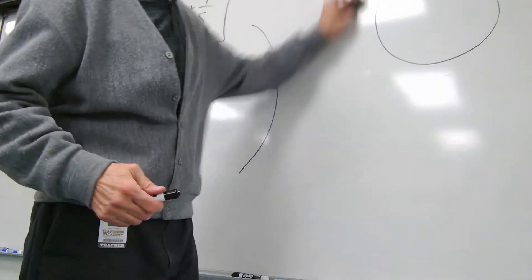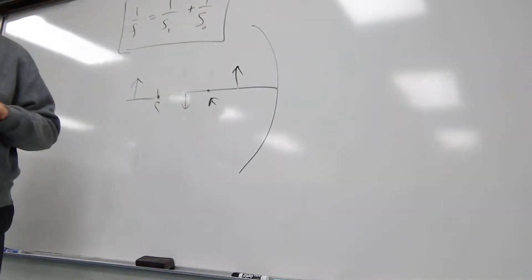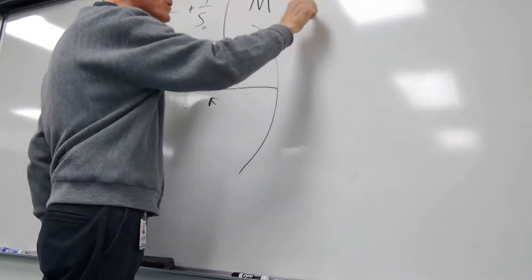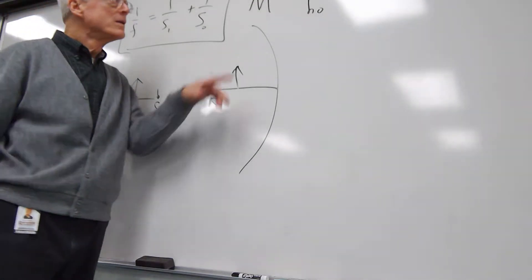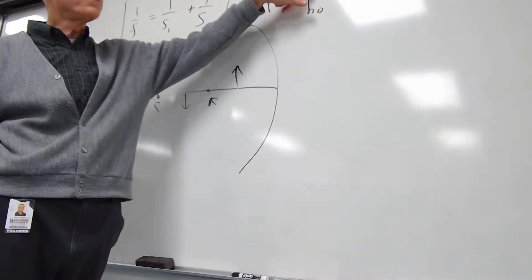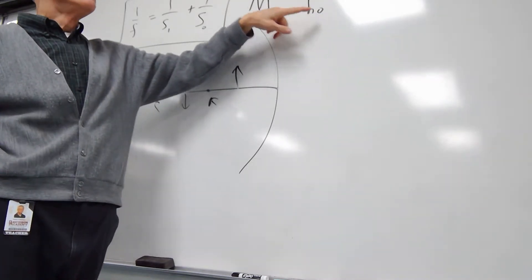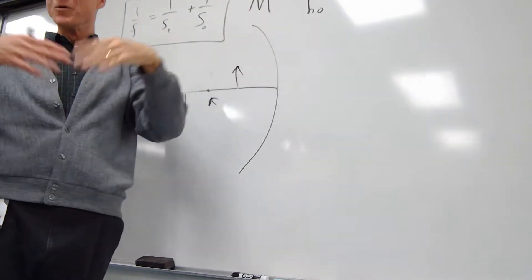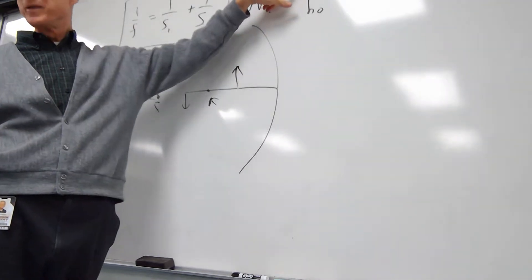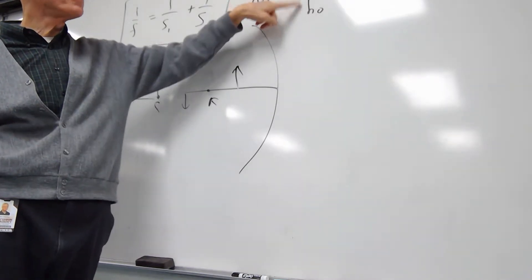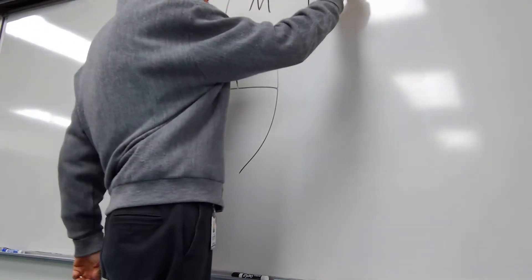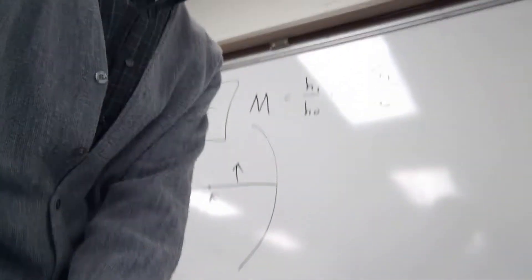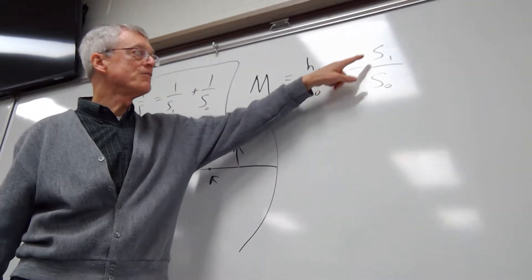The equation we didn't talk about yesterday — let's do that now. There is another equation you're going to use with these mirrors, with any curved mirror, and that's the magnification equation. First of all, it's hi over ho — the height of the image divided by the height of the object. You can also find magnification by dividing the distances, but you have to put a negative sign there. Magnification can also be negative SI over SO.